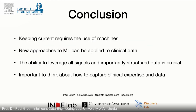Just to wrap up: keeping current requires the use of machines — we're going to have to turn towards AI techniques in order to keep current with what is coming in the literature and practice. These new large-scale natural language processing models and large-scale image processing models can be applied to clinical data. The ability to leverage all signals, and importantly the structured data we have, is crucial — your data estate becomes critical. And it's important to think about how to capture clinical expertise and data: how do you integrate the knowledge inside your clinic, and how do you think about defining the problems?